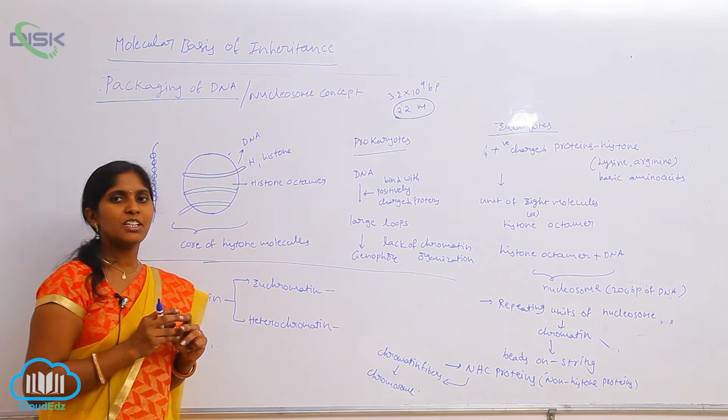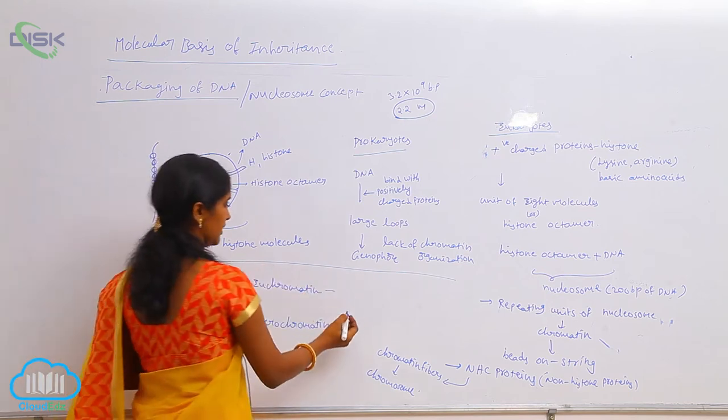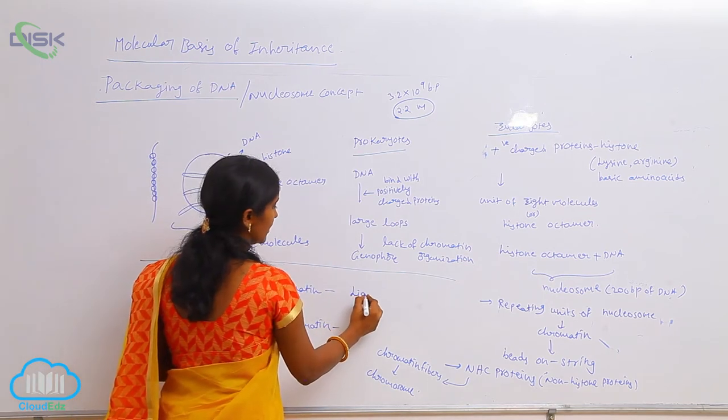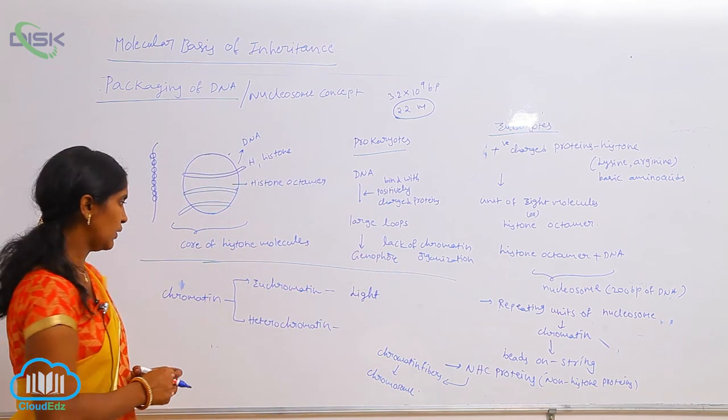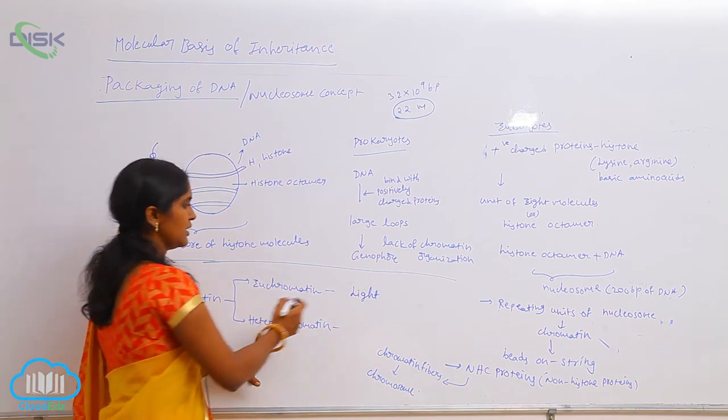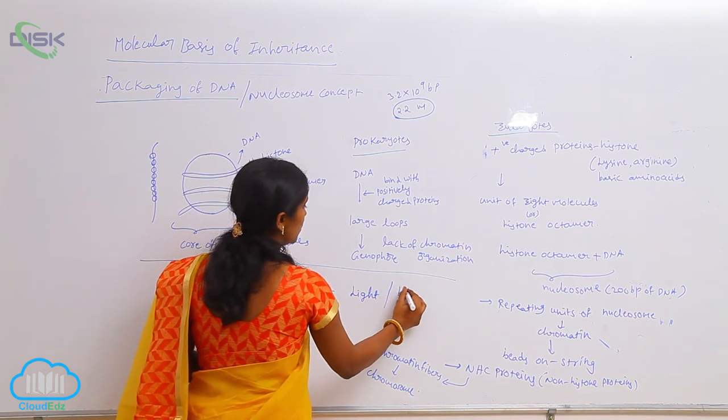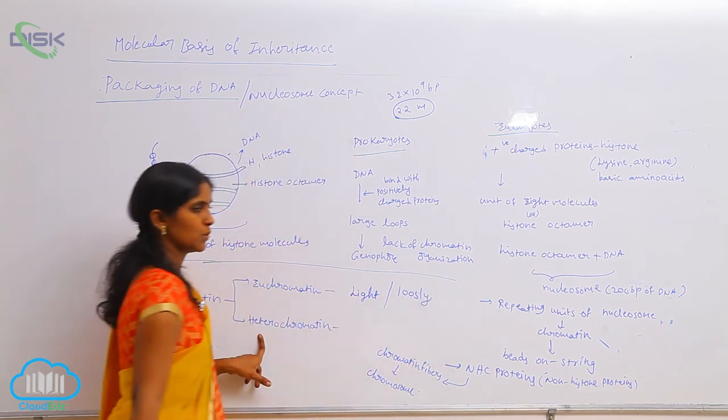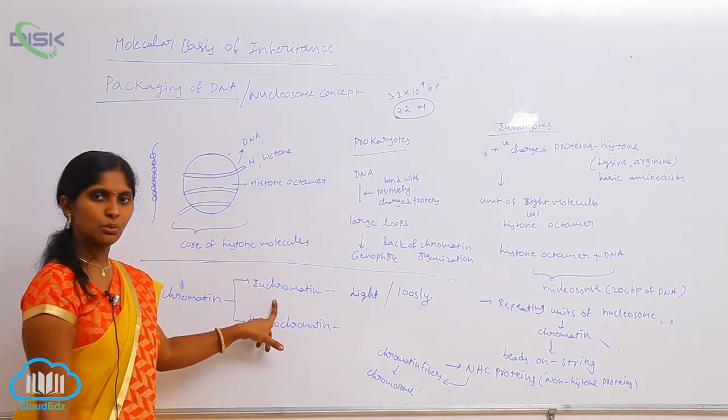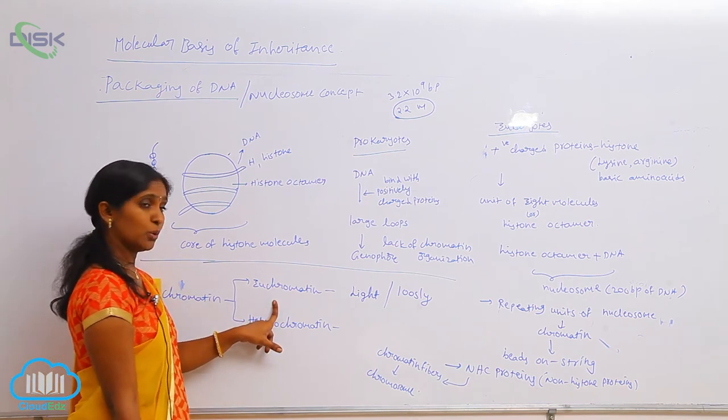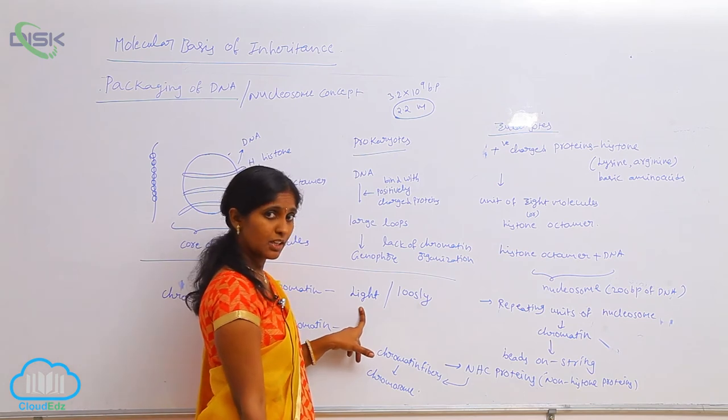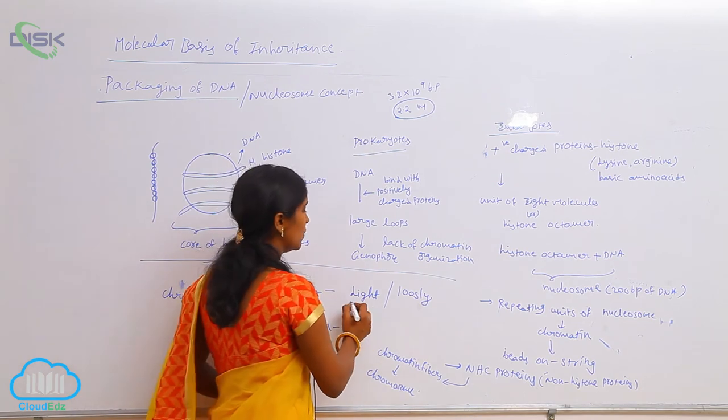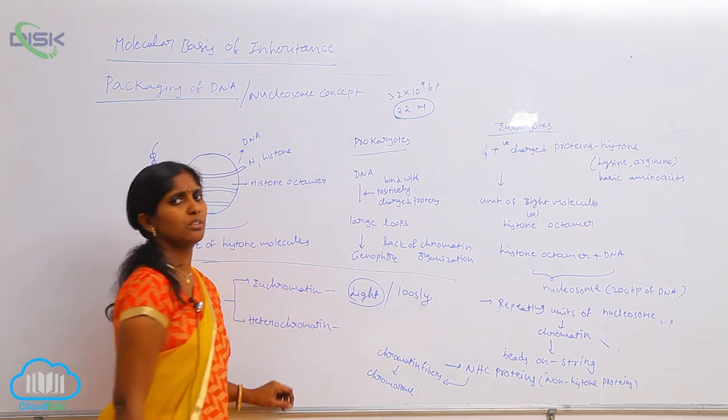There the coloration is light. In euchromatin, these are the loosely bounded nucleosomes. They are termed as euchromatin. When it absorbs the DNA stain, it looks light. It means it absorbs light color.